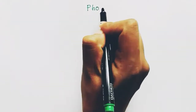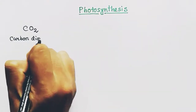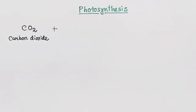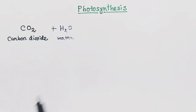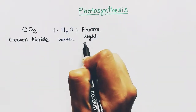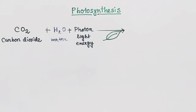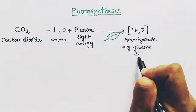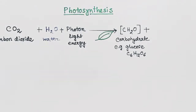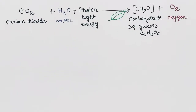Today we are talking about photosynthesis. It needs three things from the environment: carbon dioxide, water, and light or photons. In the leaves of a plant, these three things will form carbohydrate — for example, glucose — and oxygen that we breathe. Now how it occurs — that is photosynthesis.